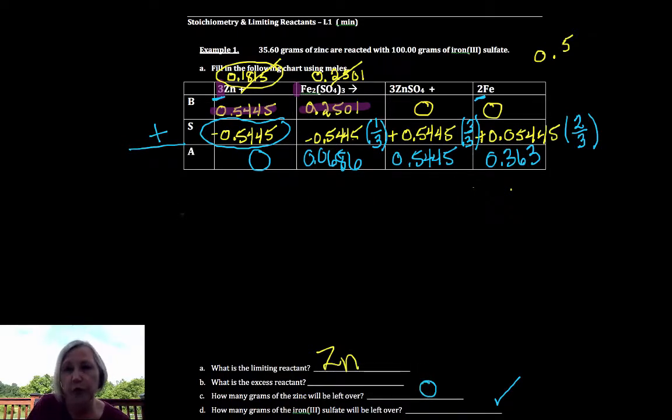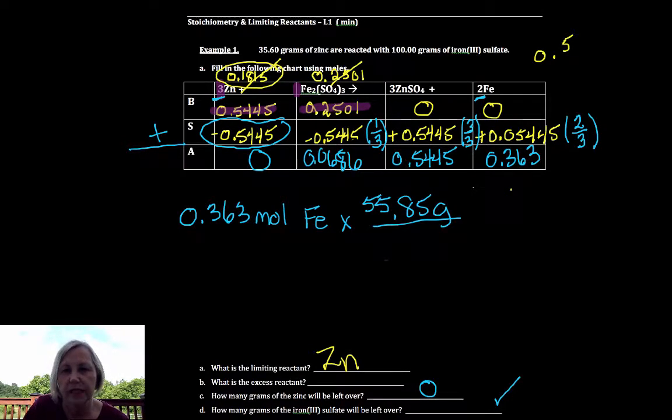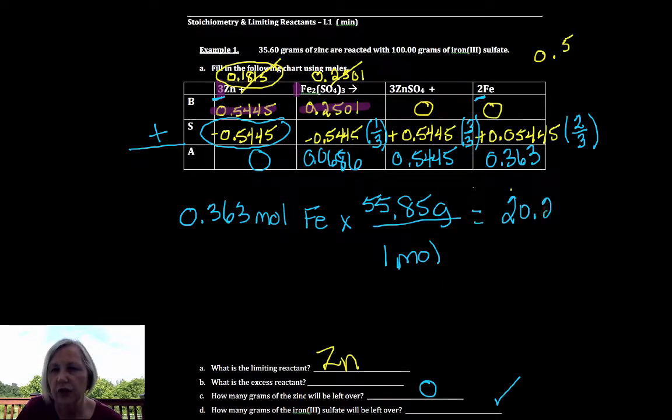So I've got this many moles of iron, mass to moles use molar mass. Iron is 55.85 grams for every one mole. So for my iron, I would have 20.27 grams of iron remaining, or formed, excuse me. That's my maximum yield.